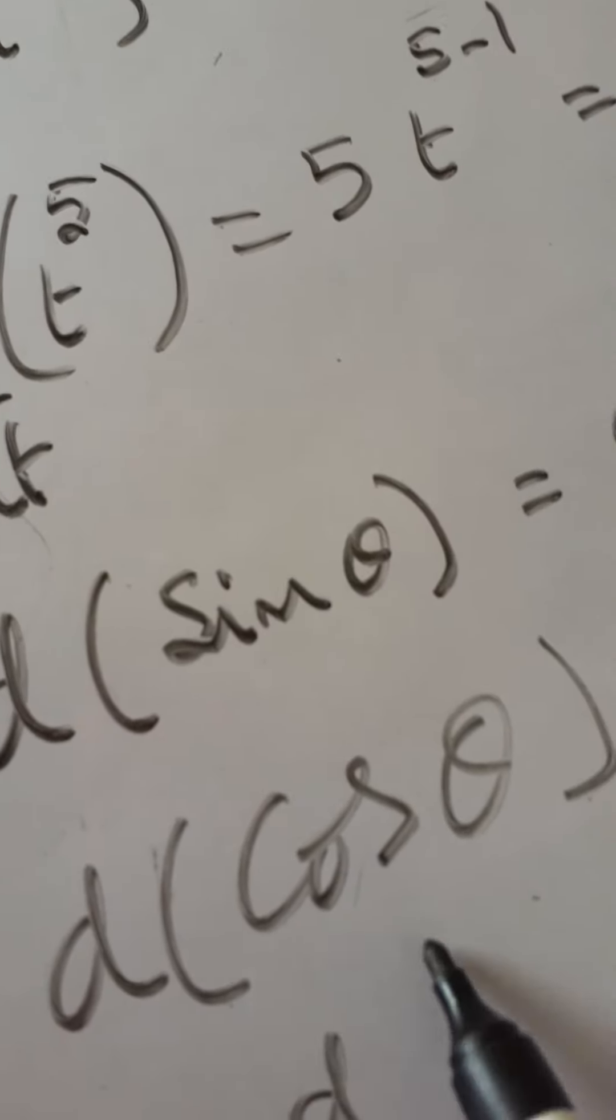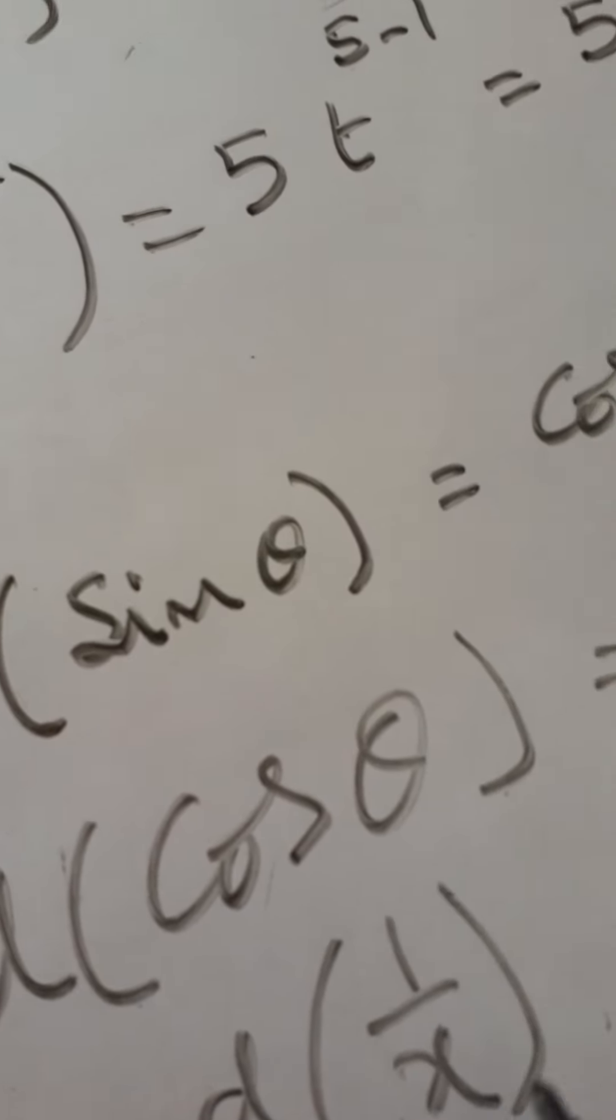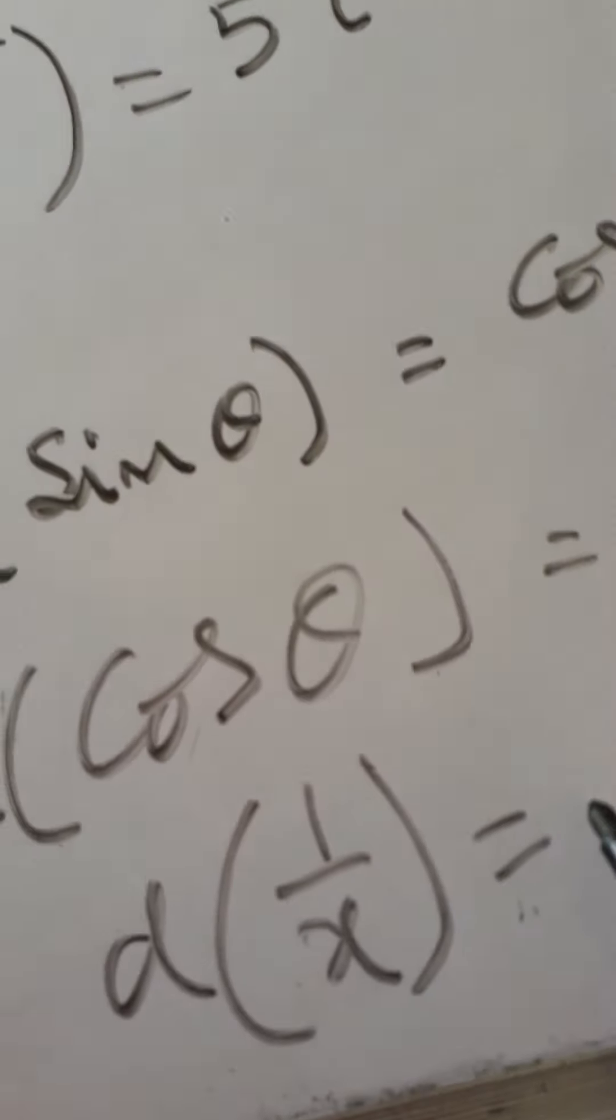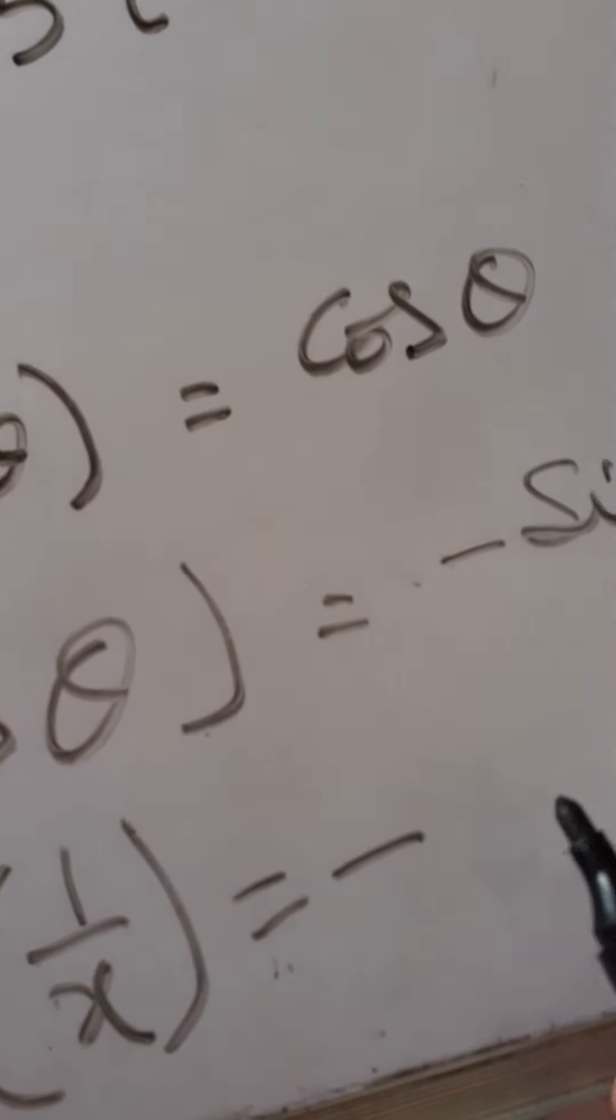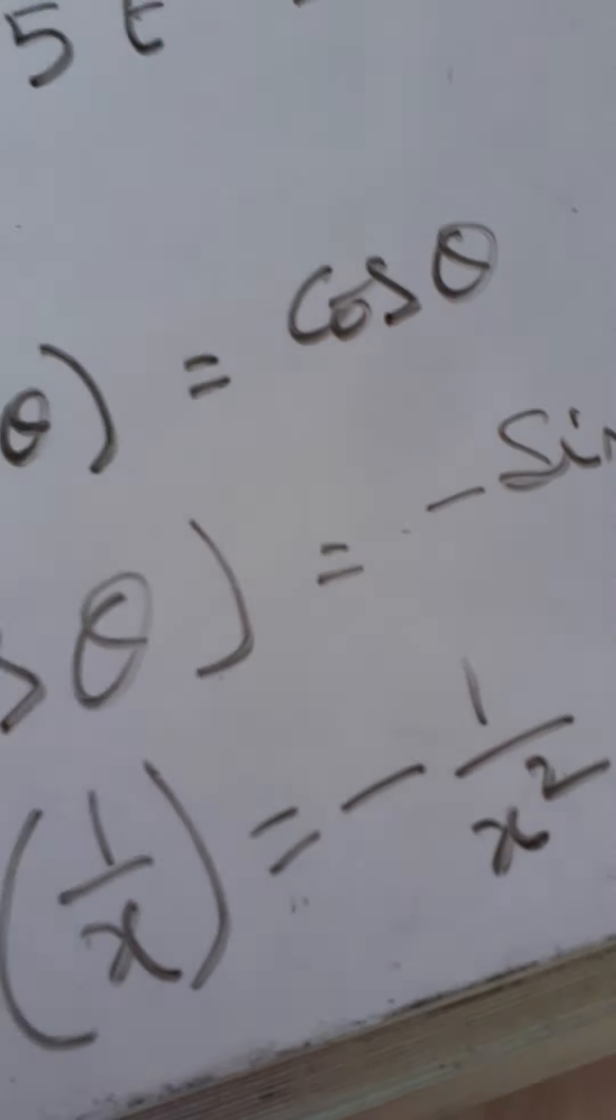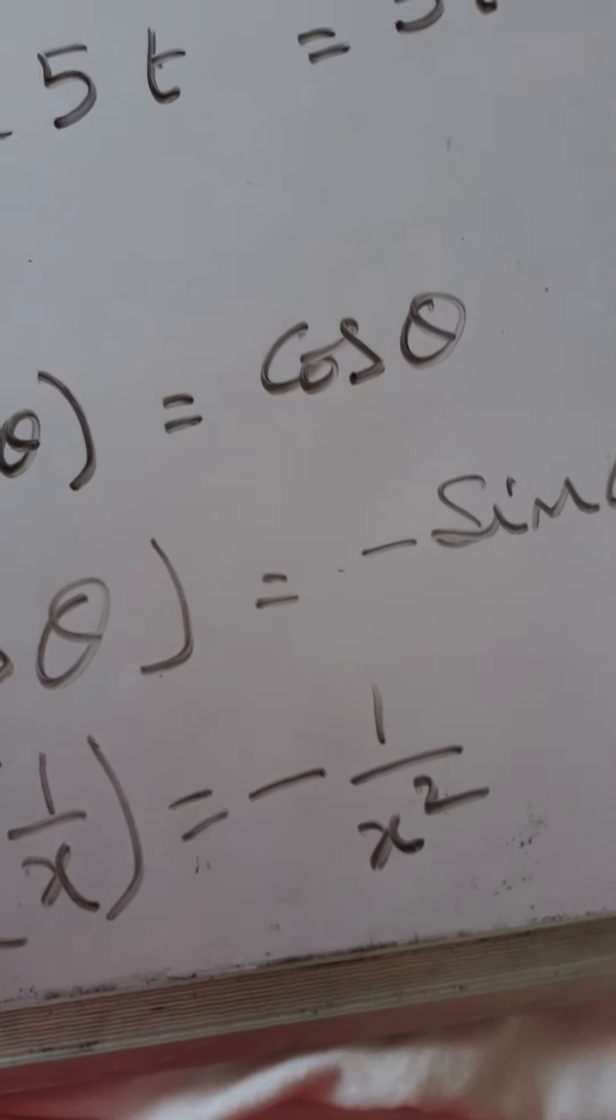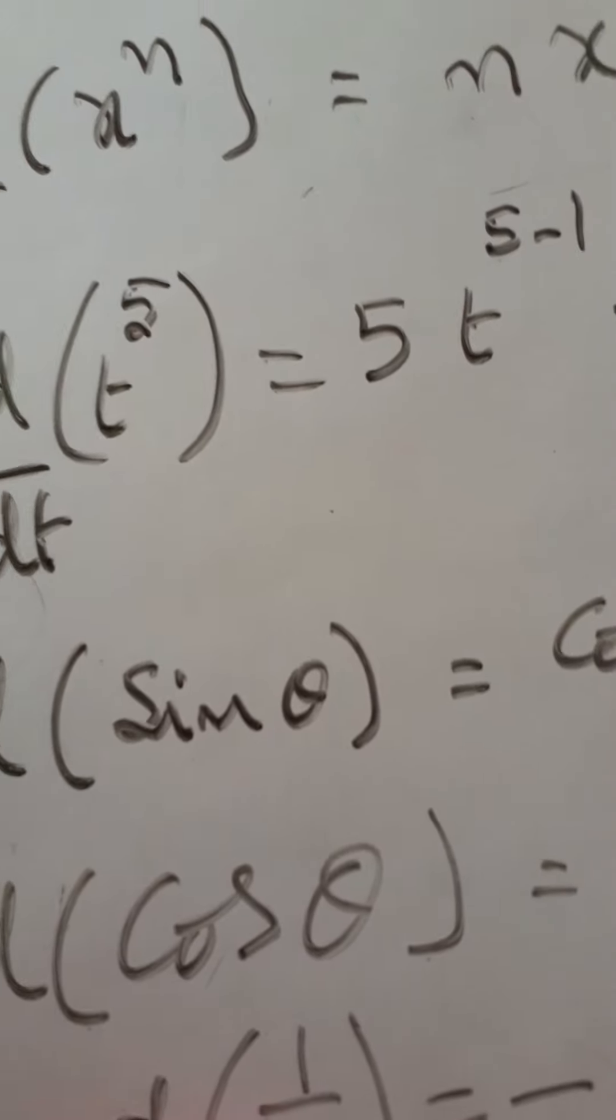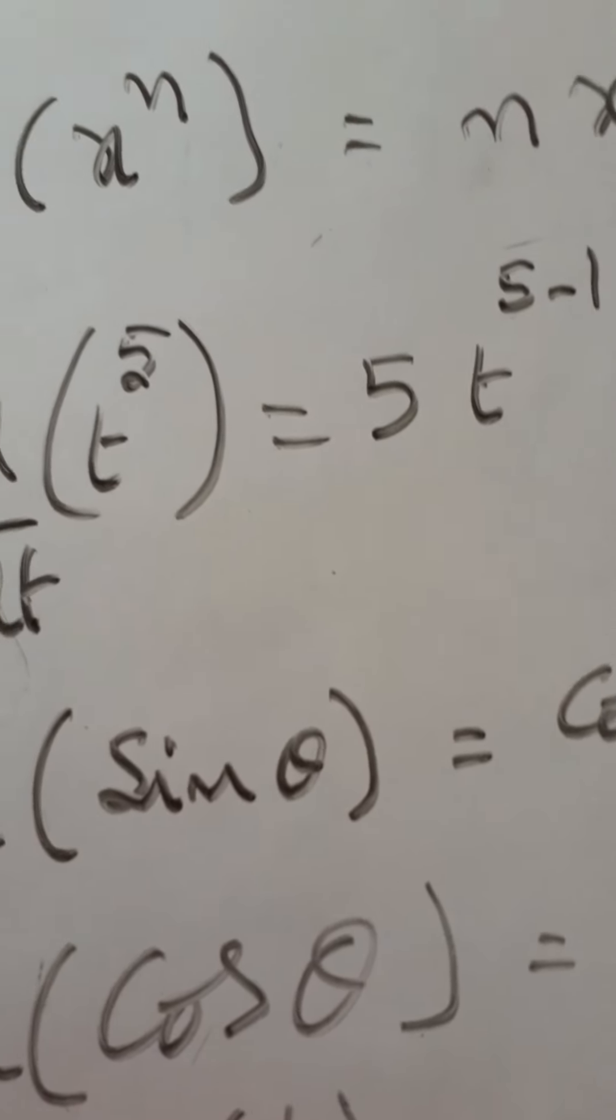Differentiation of 1 by x. That is minus, take x to numerator, x power minus 1. Minus 1 into x power minus 1 minus 1, so minus 2. So 1 by x square. So differentiation of 1 by x is minus 1 by x square. These basic formulas are enough to do the problems in physics.